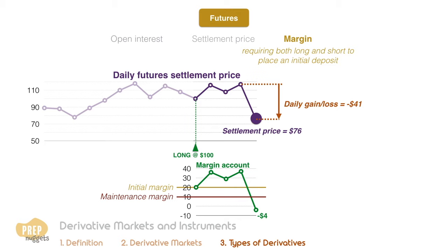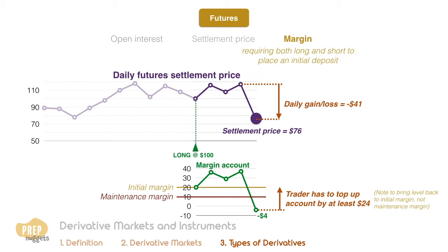The maintenance margin is the minimum amount of margin that must be maintained in the margin account. If the balance in the account falls below the maintenance margin, additional funds must be deposited to bring the margin balance back up to the initial margin amount. So in this case, the trader has to top up his margin account by $24 to bring the account balance back to $20. Note that this is different from the case of an equity account, which requires investors only to bring the margin back up to the maintenance margin amount.